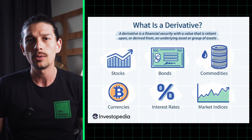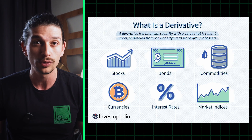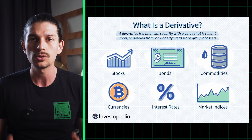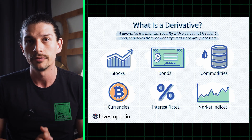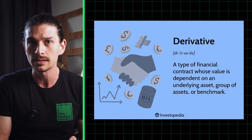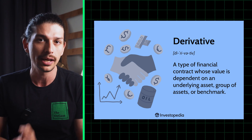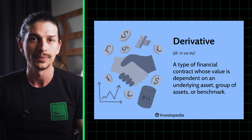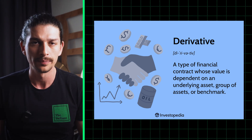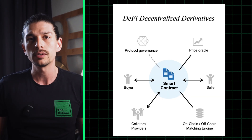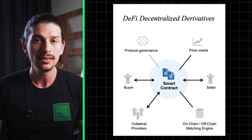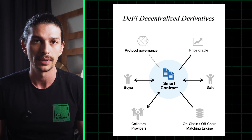Have you ever wondered how a market valued at over one quadrillion dollars functions? It's all thanks to derivatives — financial instruments that let you bet on the future of assets without actually owning them. But what exactly are DeFi derivatives? You can think of them as smart contracts for betting with leverage in the decentralized finance space.